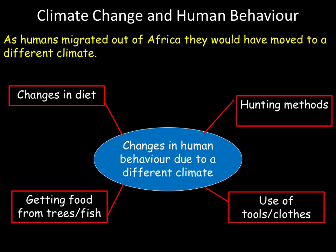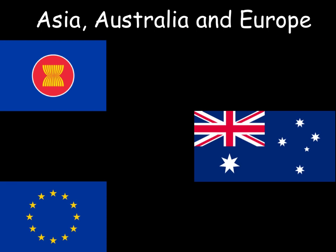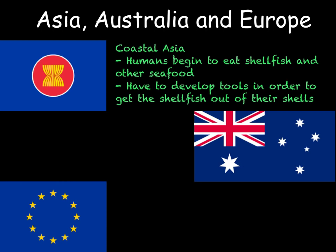We will look at three examples of these behavioural changes in more detail. In Asia, the fossilised remains and tool remains suggest that humans lived predominantly near the coast, so they would have started eating things like shellfish and other seafood. In order to eat these, they would have had to develop new tools to get shellfish out of their shells.